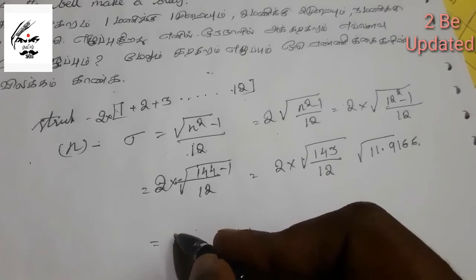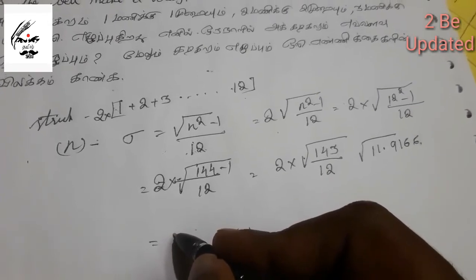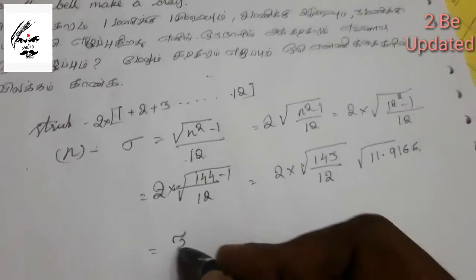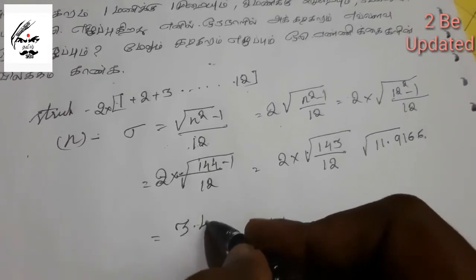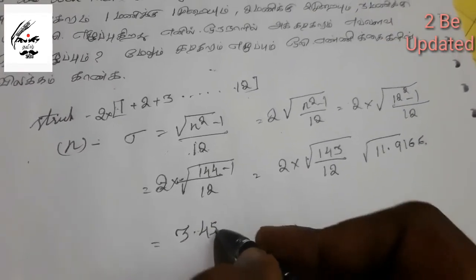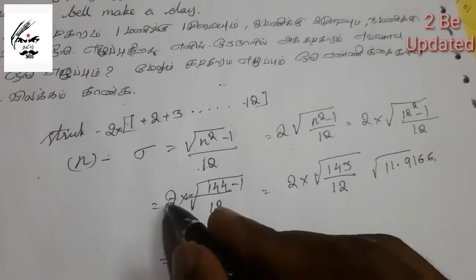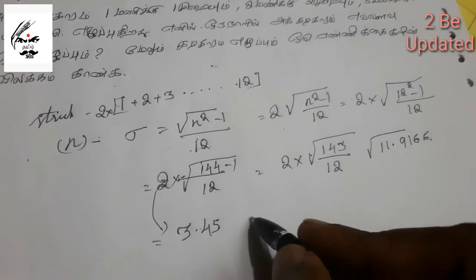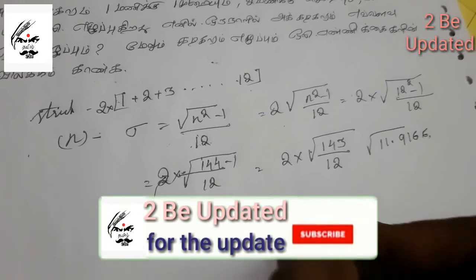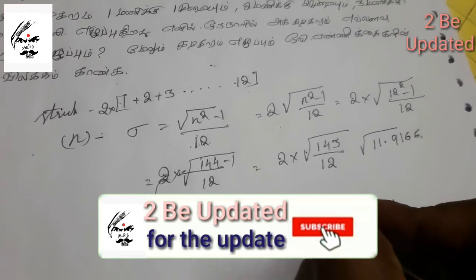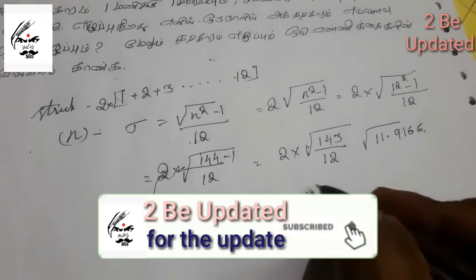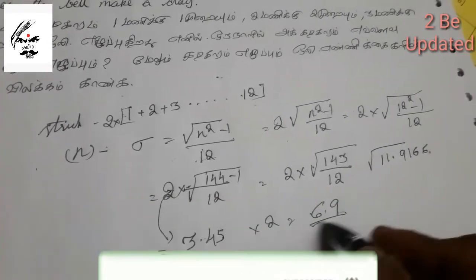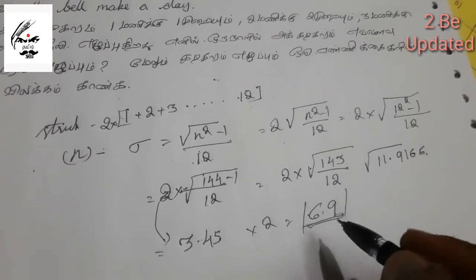The standard deviation is equal to √(n² − 1) / 12. If you multiply it through, it will be 6.9, so the answer is 6.9.